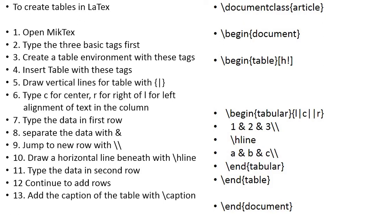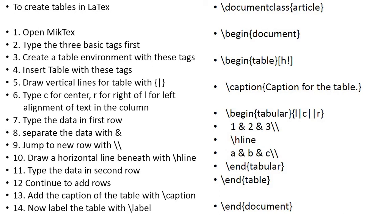Now add the caption to the table with the \caption command — inside the curly braces, type the caption text. Then label your table with the \label command. As mentioned in the adding figures tutorial, \label is optional but very important. If you want to refer to this table later, label it — for example, as tab1. Every table must have a unique label. To reference it, use \ref{tab1}, which will automatically pick the table number.